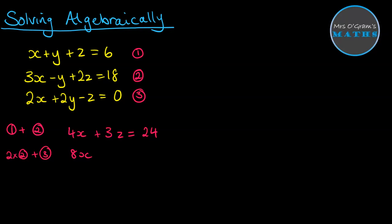And then two times the two z makes four z. Add on equation three, which is a negative z. So we get plus three z equals and then we've got two times the 18 is 36. Add the zero. And then I'm going to label this one as equation four and this equation five so I can keep track of what we're doing next.